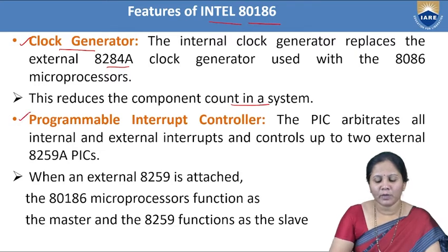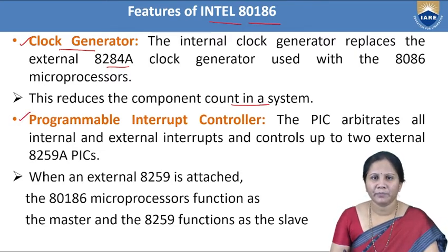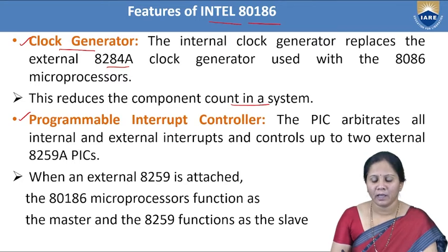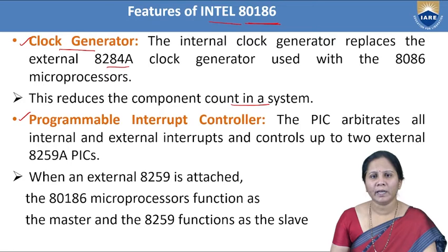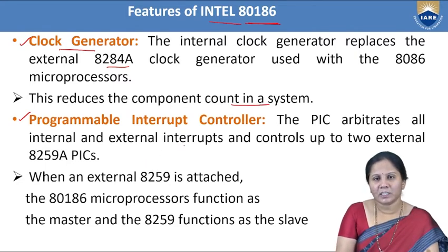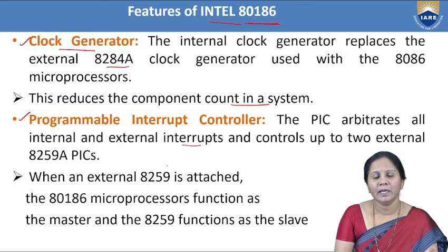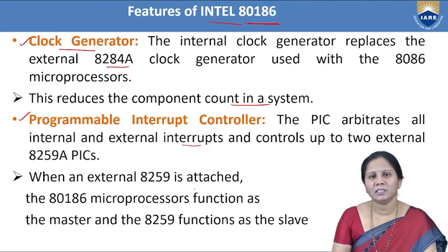The next built-in peripheral is the programmable interrupt controller (PIC). In the 8086, the 8259 PIC is interfaced externally, but in the 80186, one PIC is inbuilt and can handle 8 interrupts. If more interrupts are needed, external 8259 ICs can be connected — the internal PIC becomes the master 8259 and the externally connected ICs become slave 8259 ICs.